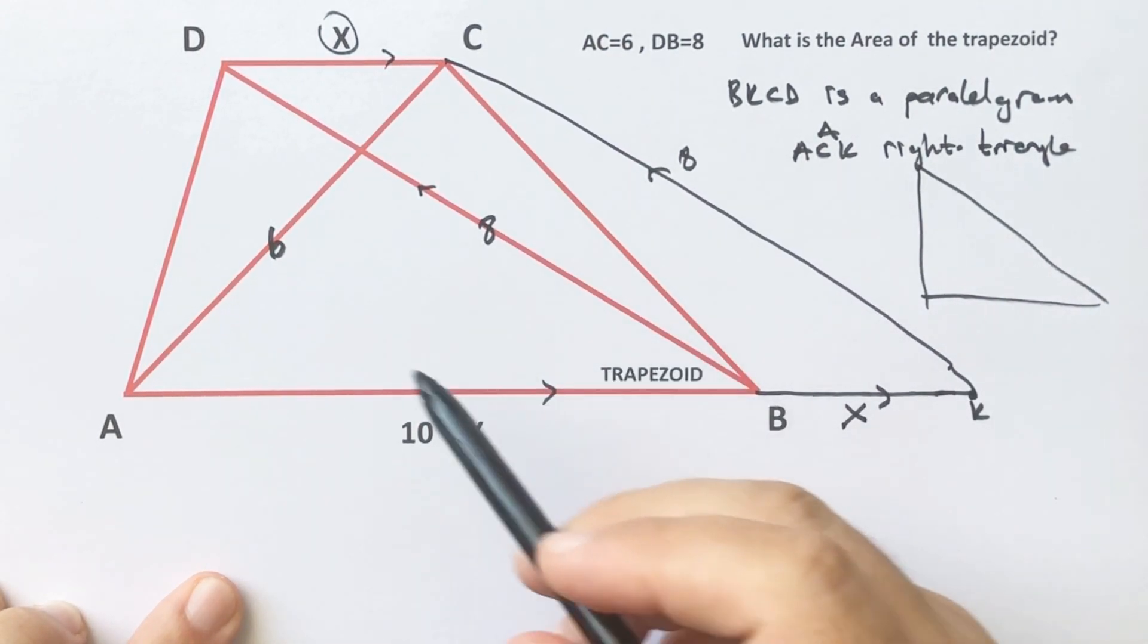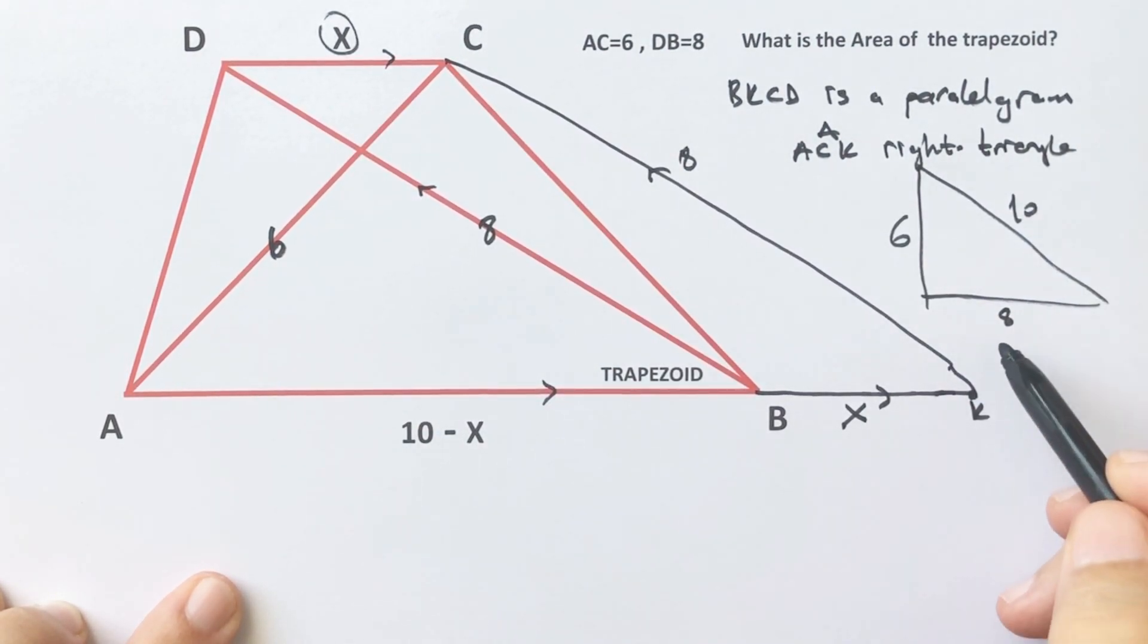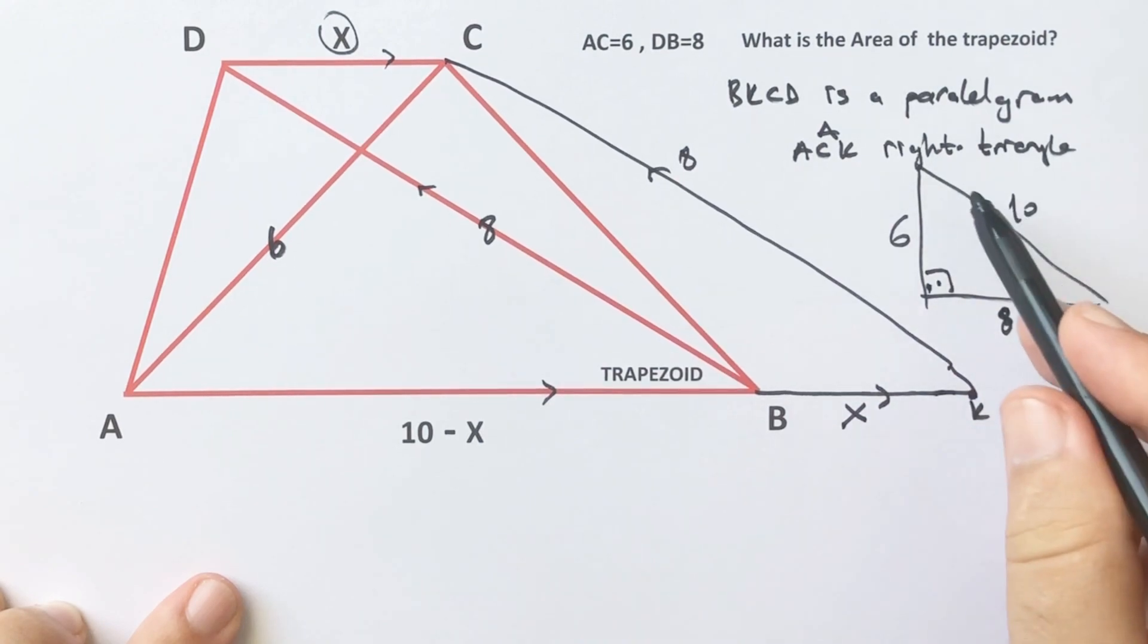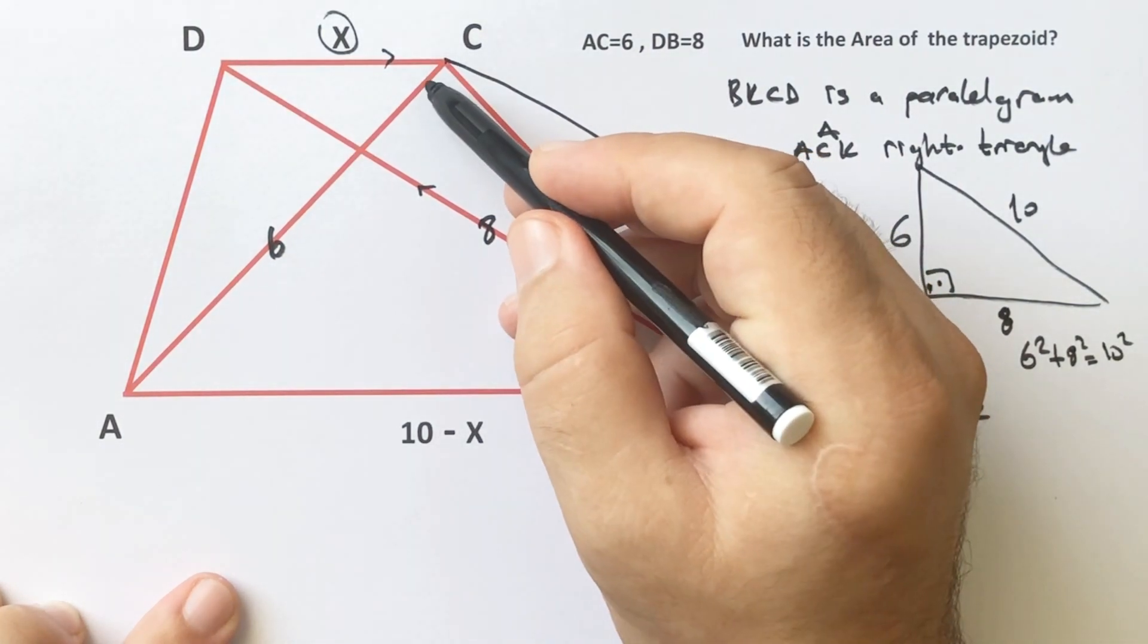Let's see: this length is 6, this side is 8, and the hypotenuse is 10. That means this angle must be 90 degrees, because 6 squared plus 8 squared equals 10 squared.